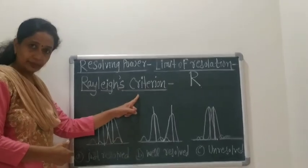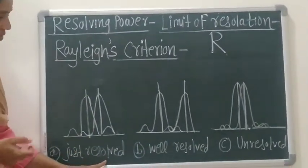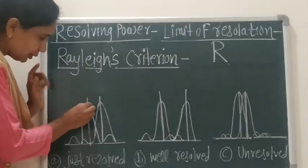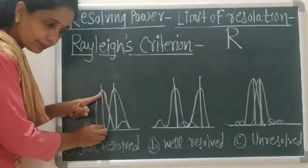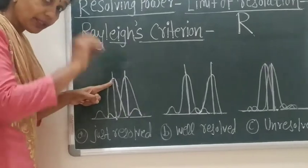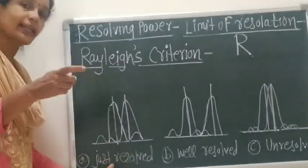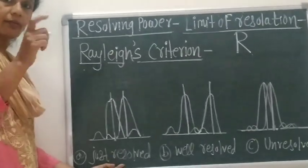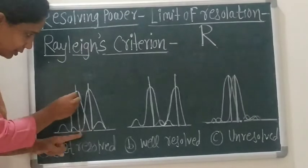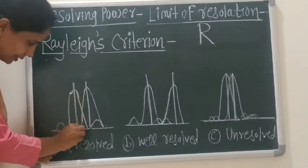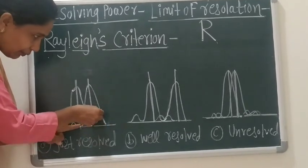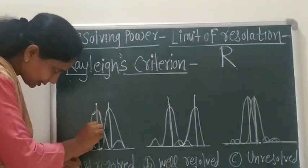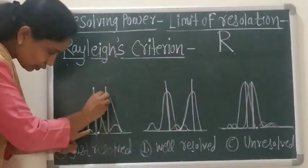According to Rayleigh's Criteria, two objects are said to be just resolved if the central maximum of the diffraction pattern of the first source coincides with the first minimum of the diffraction pattern of the second source. So the central maximum of the first source and the first minimum of the second source coincide.